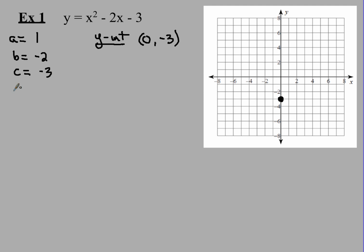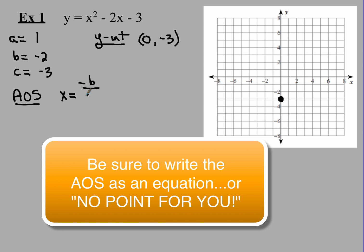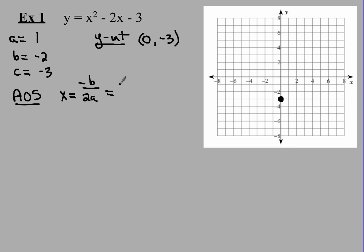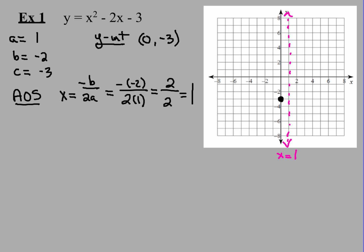The next thing I'm going to do is find my AOS, my axis of symmetry. You might need to write down the formula — just remember, it's negative b over 2a. Negative negative 2 over 2 times 1. Negative negative 2 gives 2 in the numerator, and 2 times 1 in the denominator is 2. When I reduce that, I get 1. So my axis of symmetry is x equals 1. I'm going to draw a dashed line right there. That's going to be my AOS.